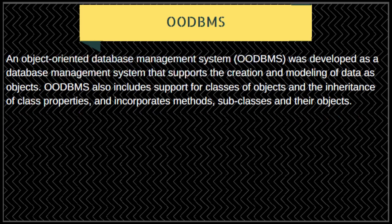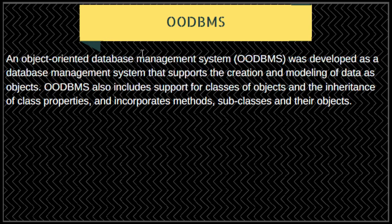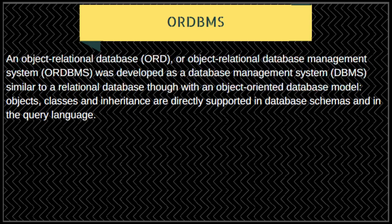The object-oriented database model supports the modeling and creation of data as objects. Advantages include efficiently managing large numbers of different data types, and objects with complex behaviors are easy to handle using inheritance and polymorphism. Limitations include that switching an existing database to this type requires an entire change from scratch, and it is typically tied to a specific programming language and API, reducing flexibility.